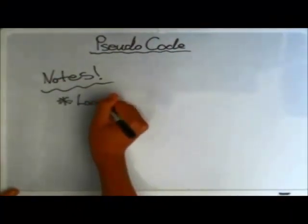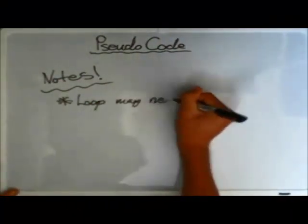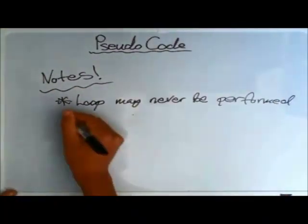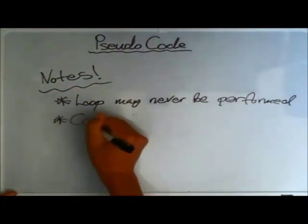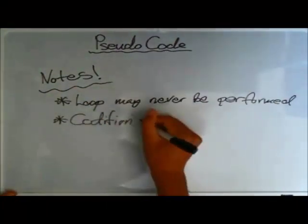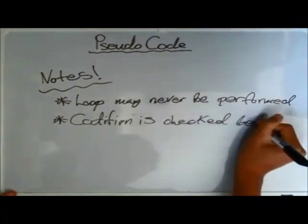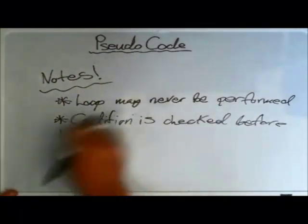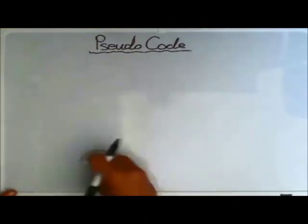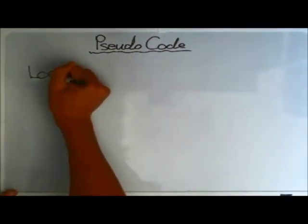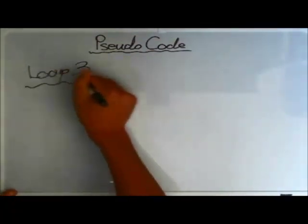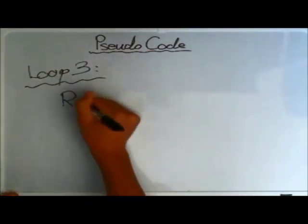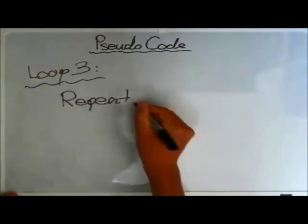The WHILE DO WHILE loop may never be performed, and there's a reason for that: the condition is checked at the beginning of the loop. So before the loop starts, if your code does not meet the condition, you will not run through the loop.